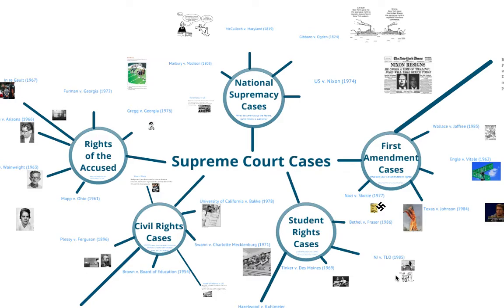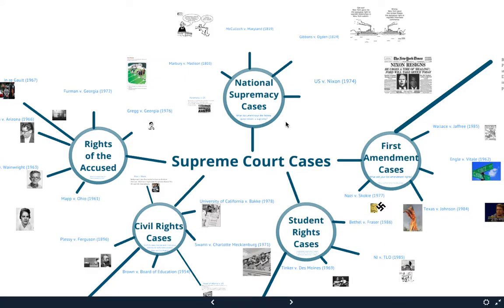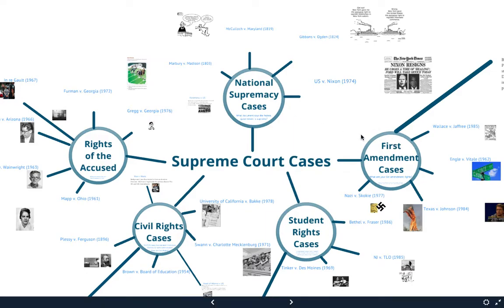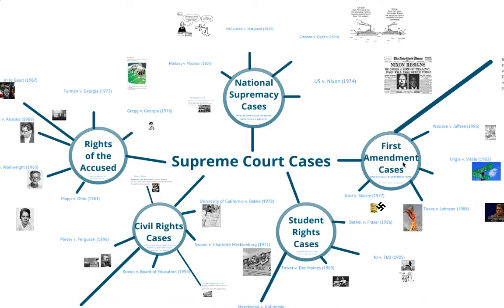There are five cases total. You have national supremacy cases, which say essentially that the federal government has all power. If you remember, that is the idea of federalism — that federal law is the highest law. You have First Amendment cases that obviously deal with your rights to religion, assembly, press, petition, or speech.